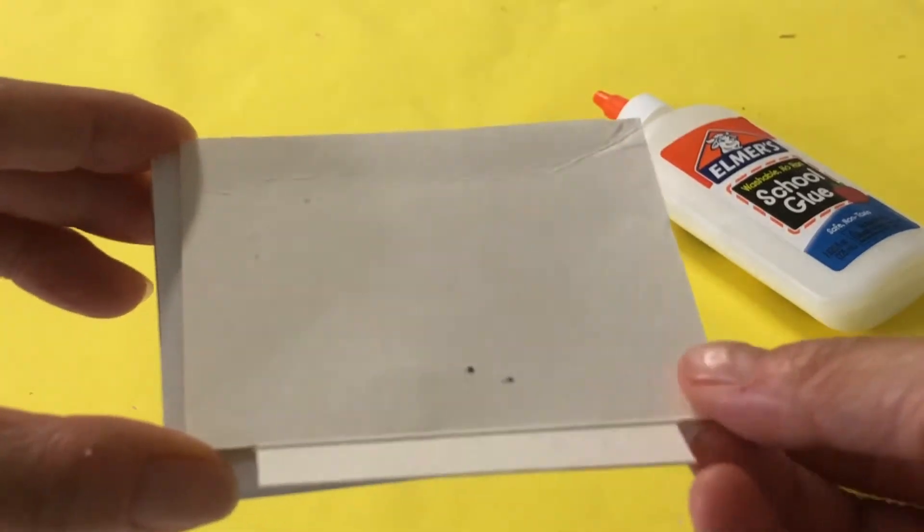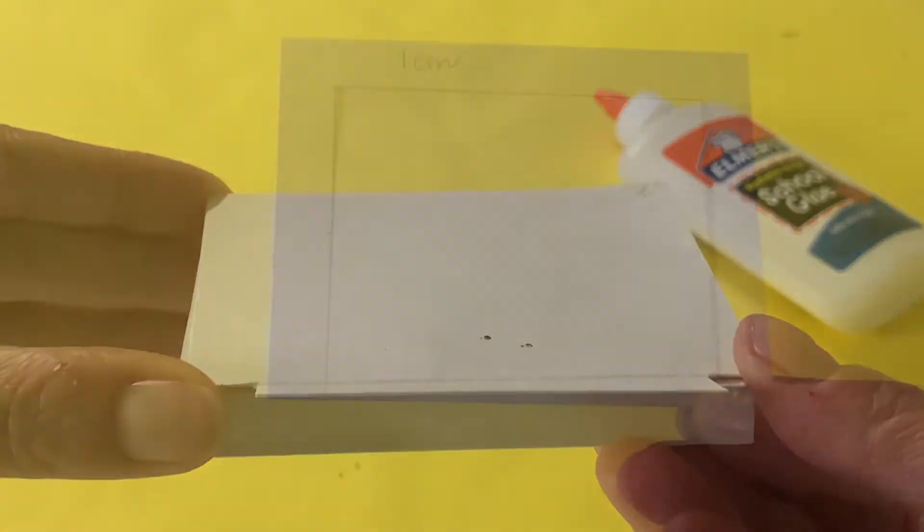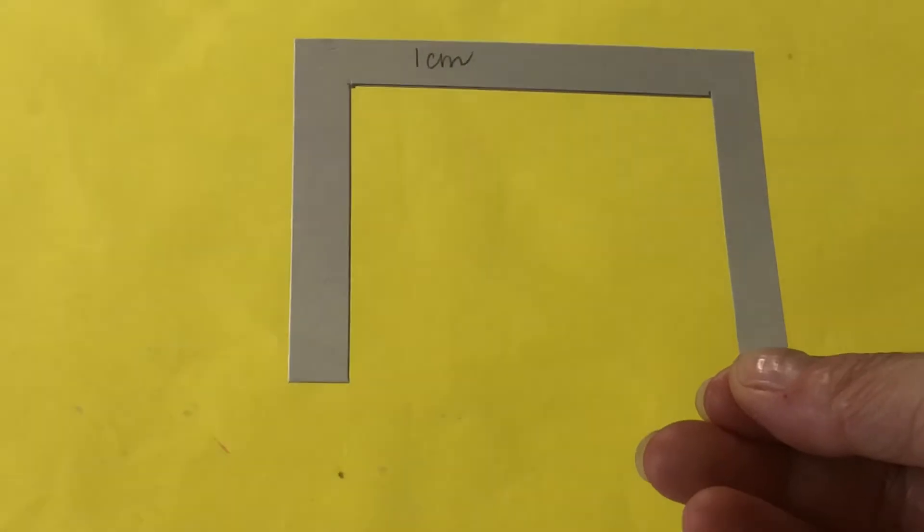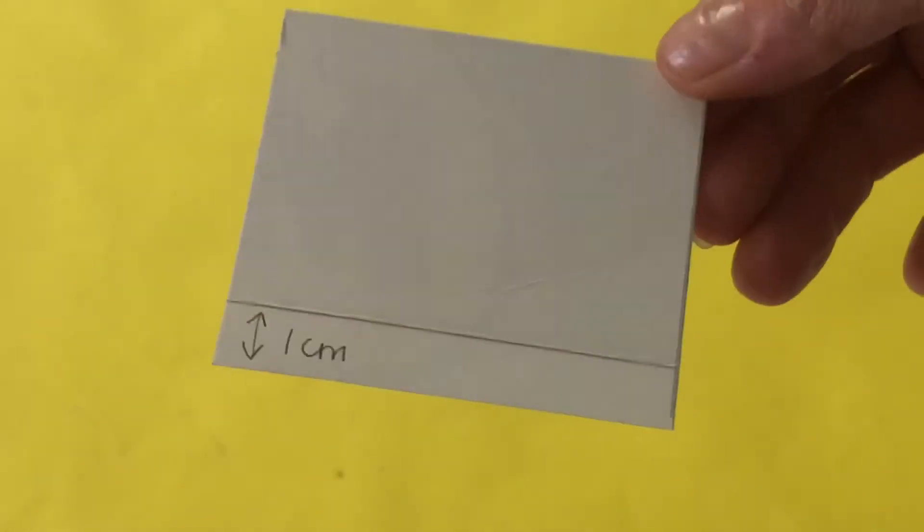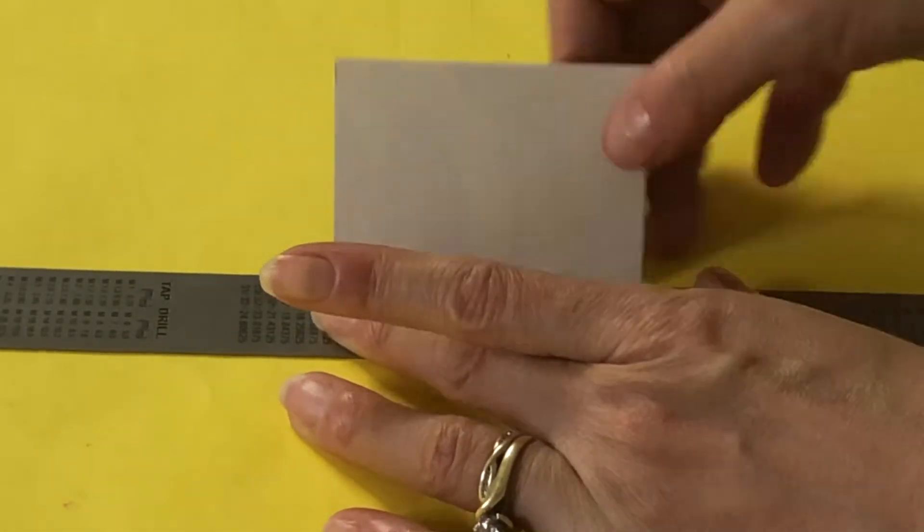For the paper tray, mark a one centimeter border on three sides, then cut away the center. Repeat to make three. Take one cutout and fold a one centimeter tab on the long side. Measure and cut one centimeter off the other end.